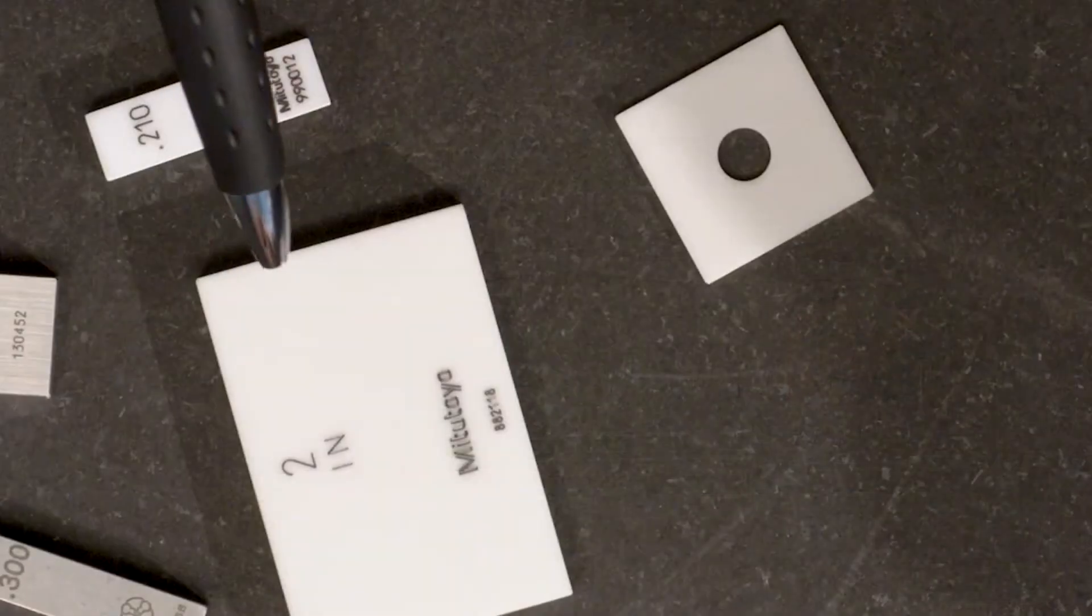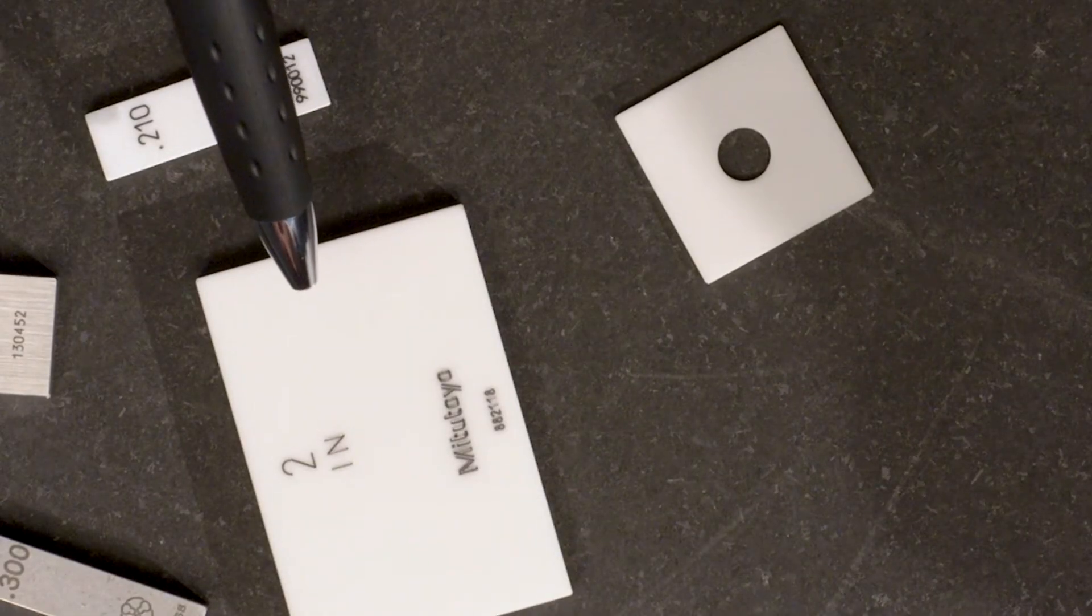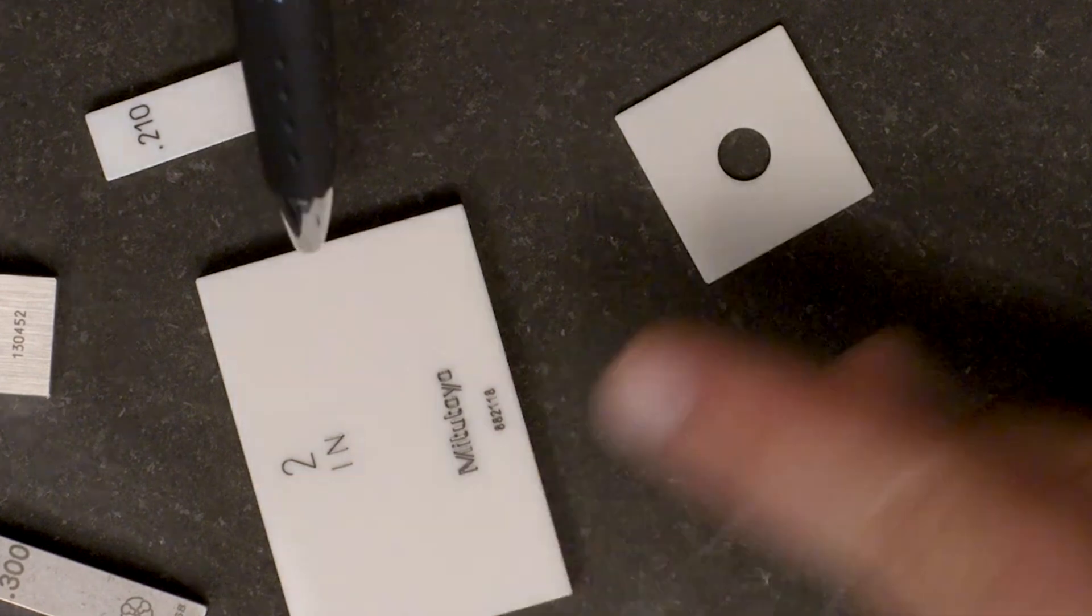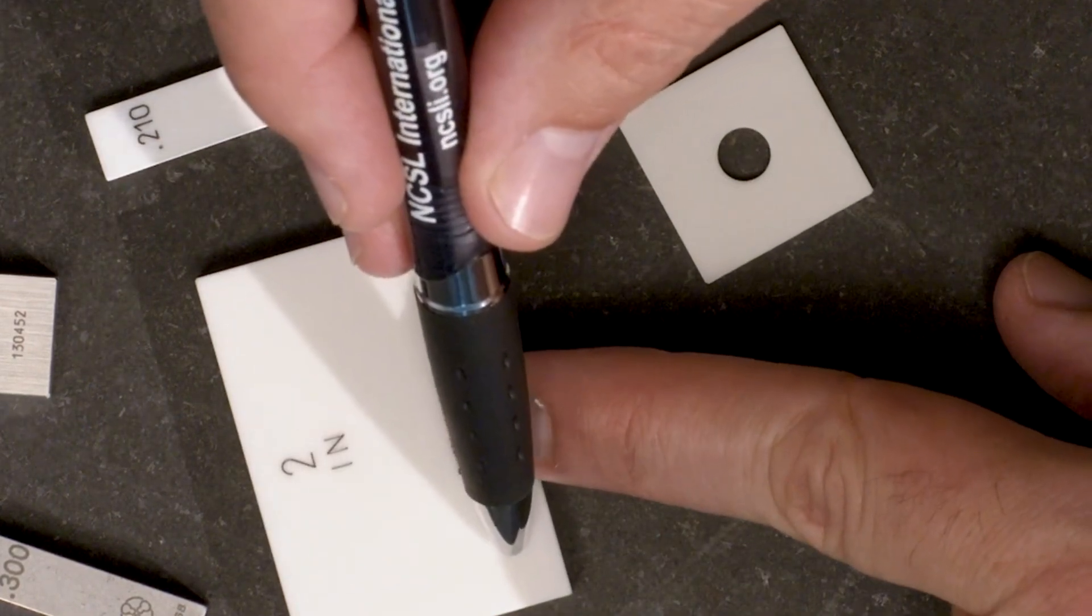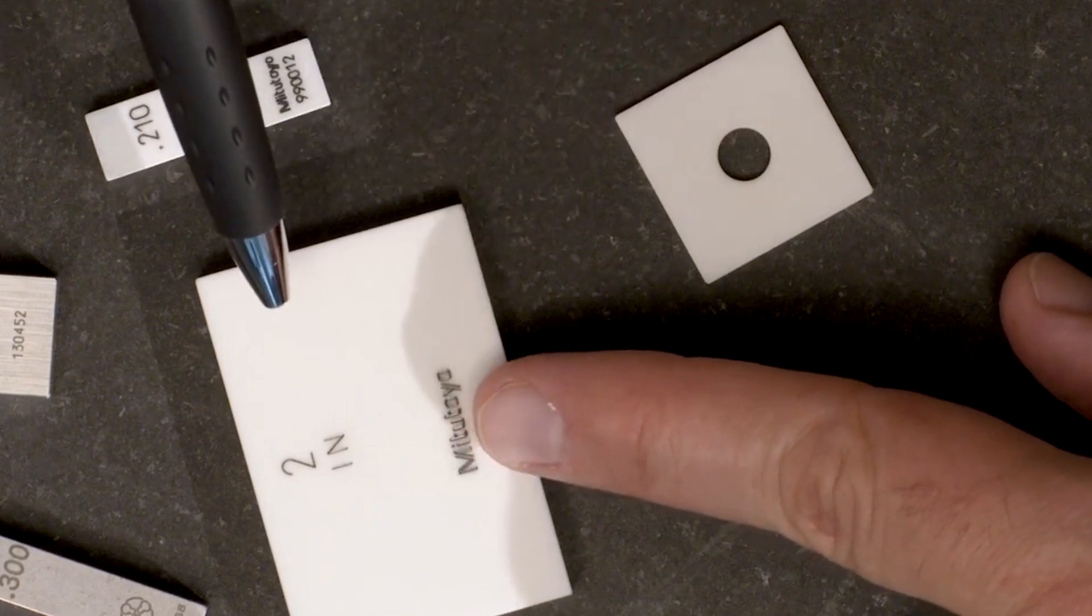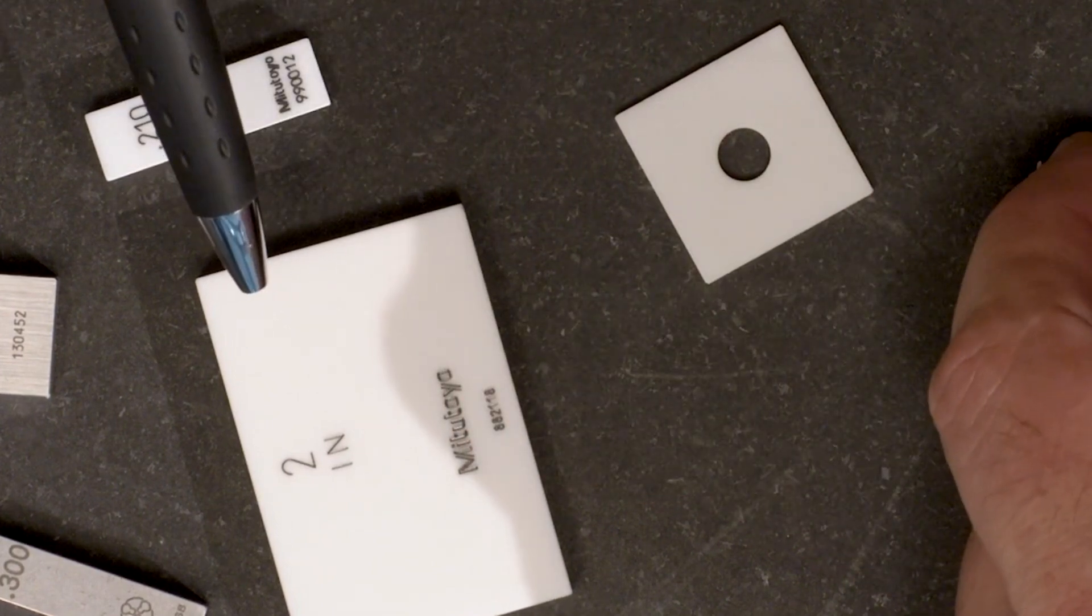I have to admit, I'm a bit awestruck with the Gauge Block. These simple little blocks are something special, each one with their flat and parallel surfaces, and with an accuracy of just a few millionths of an inch.